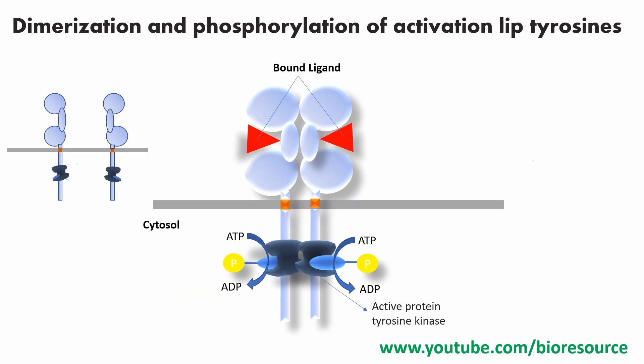The tyrosine kinase region has the activation lip and the tyrosine residues in the tail region. When a ligand comes and binds to the receptor region, the bound ligand creates dimerization of the receptor tyrosine kinase — it is initially present as a monomer, and once the ligand binds, the two come together and form a dimer. This induces a conformational change in the activation lip, resulting in phosphorylation from ATP to ADP, producing an active protein tyrosine kinase.